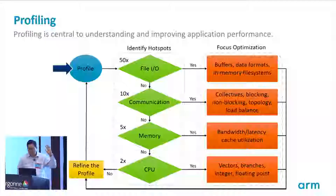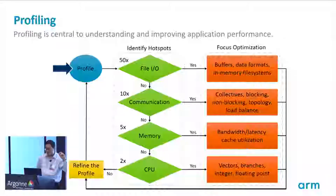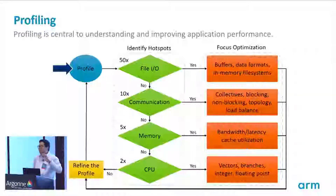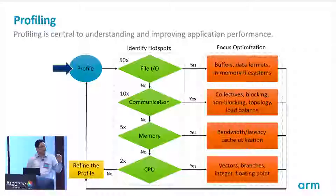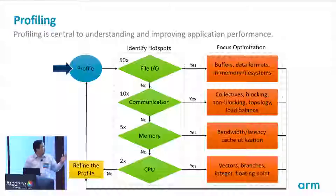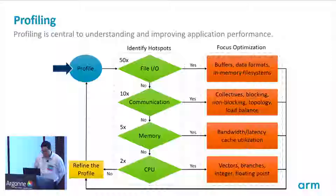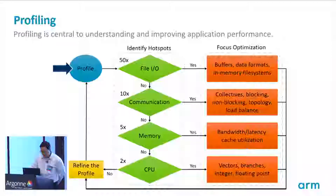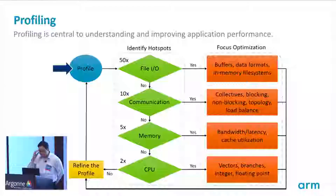One thing to keep in mind is that, for instance in communication, if there's some type of load imbalance, it doesn't matter how well vectorized your code is if cores are just waiting for other processes to finish. That's why communication is listed above CPU profiling. That's not to say vectorization isn't important, but the impact of communication issues could be greater if you're not aware of them.